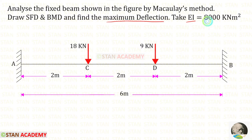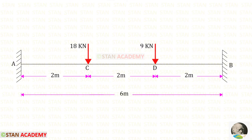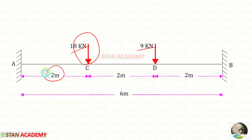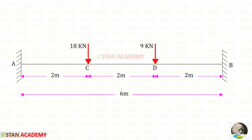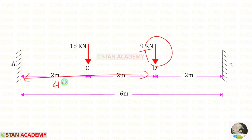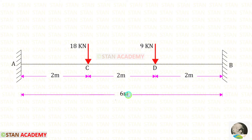The value of EI is given as 8000 kNm². In this beam, there are two point loads: 18 kN and 9 kN. The load 18 kN is acting at a distance of 2 m from point A. The load 9 kN is acting at a distance of 4 m from point A. The total length of the beam is 6 m.